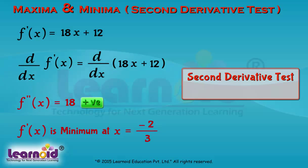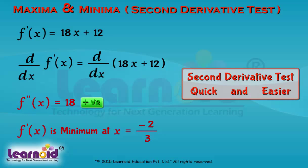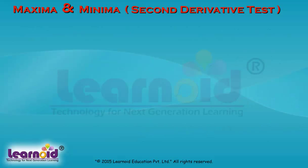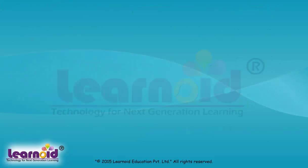The second derivative test is quicker and easier than the first derivative test. So always use the second derivative test to find minima and maxima.